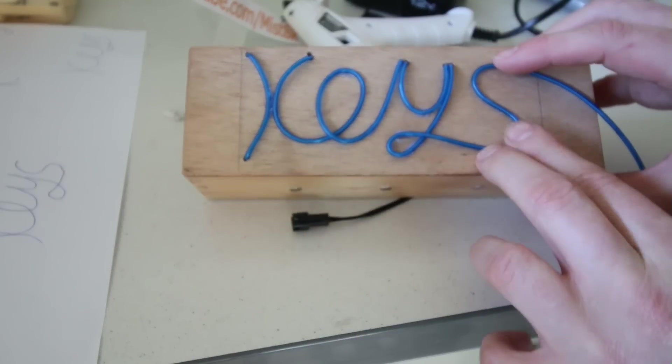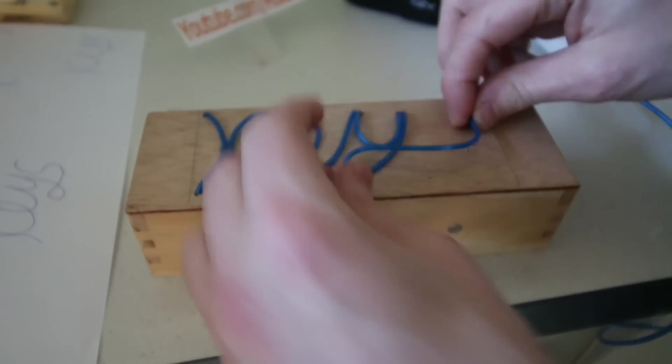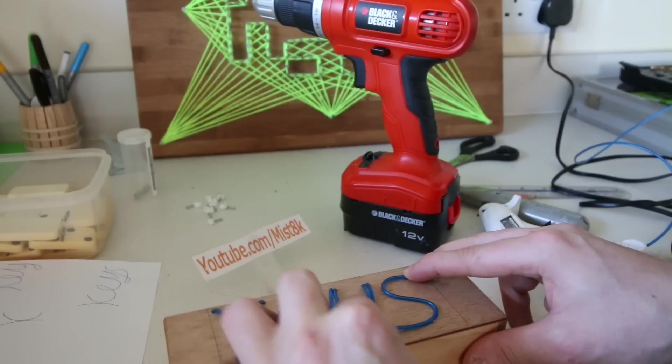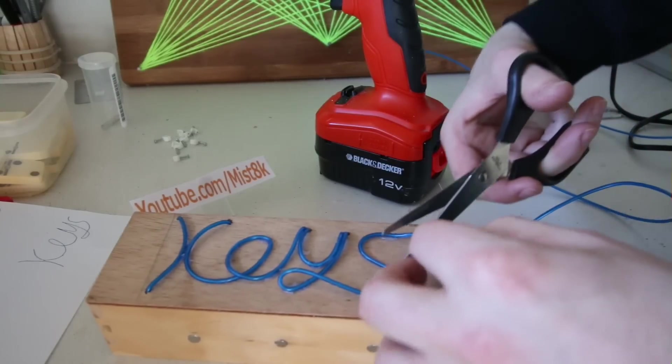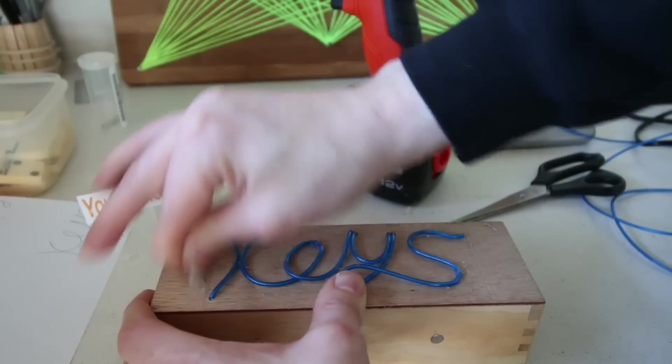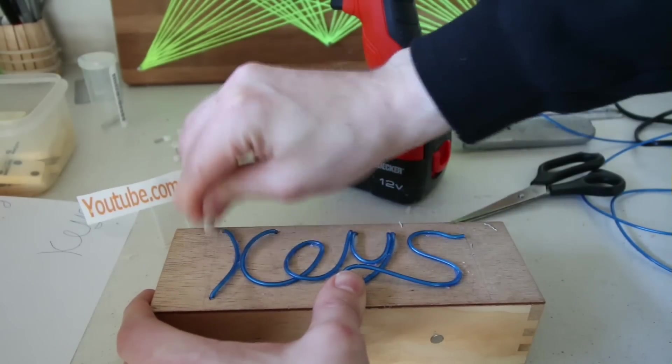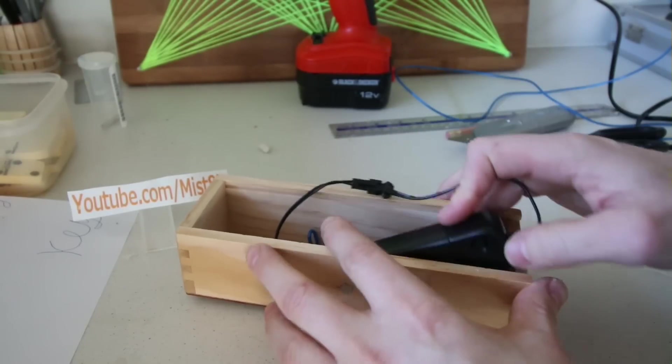And then simply formed the S and stuck it into place. The rest of the wire can then be cut off. Just need to rub out those lines. Next it was time to add the battery pack for the wire.